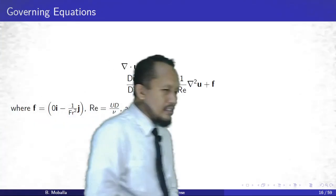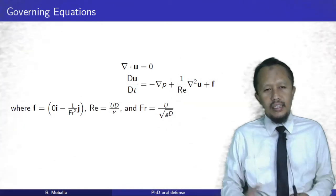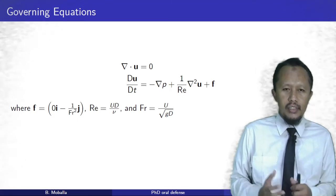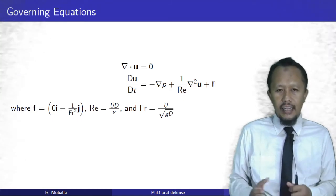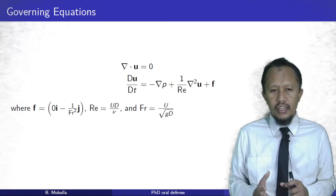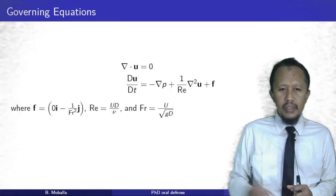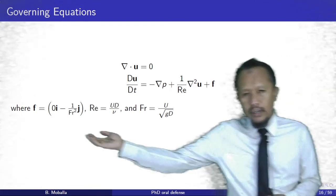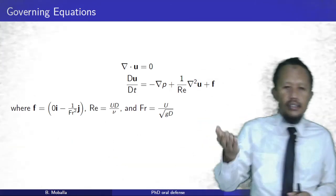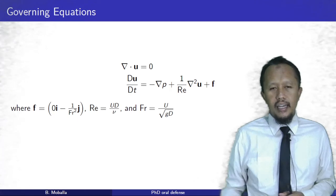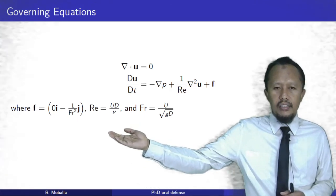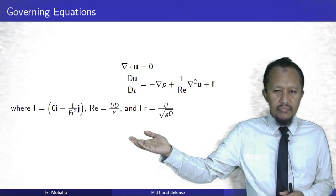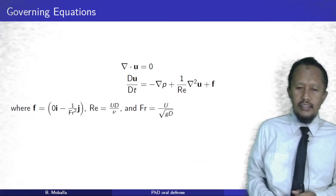In the present study, we solve the incompressible Navier-Stokes equations with a body force representing gravity, using a non-dimensional form. We have 1 over Reynolds number in the viscous force term and 1 over Froude number squared in the body force term. Both the Reynolds number and the Froude number are defined based on the cylinder diameter.